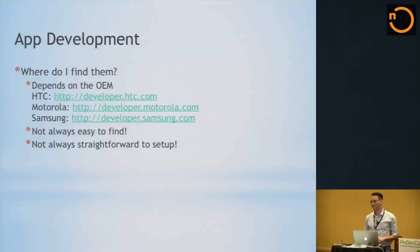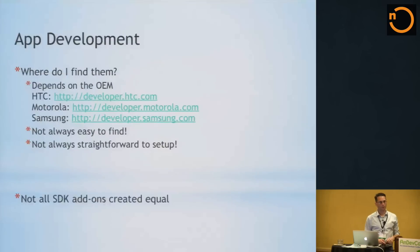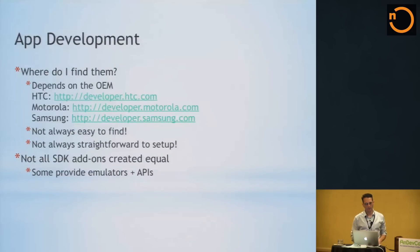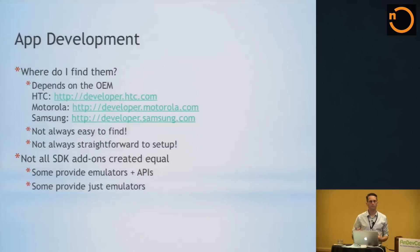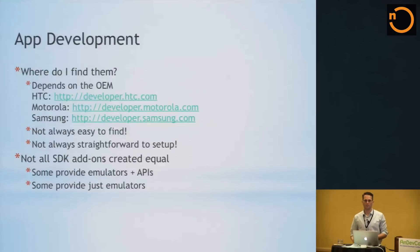Ideally, you should be able to enter a URL into the SDK manager, click a couple of buttons, and it's there - however, it doesn't always work that way. Not all SDK add-ons are created equal. In some cases they provide emulators with APIs that emulate their devices and also the API you can link against. In other cases they provide just an emulator so you can see how your app runs on their device, but without access to their underlying APIs.